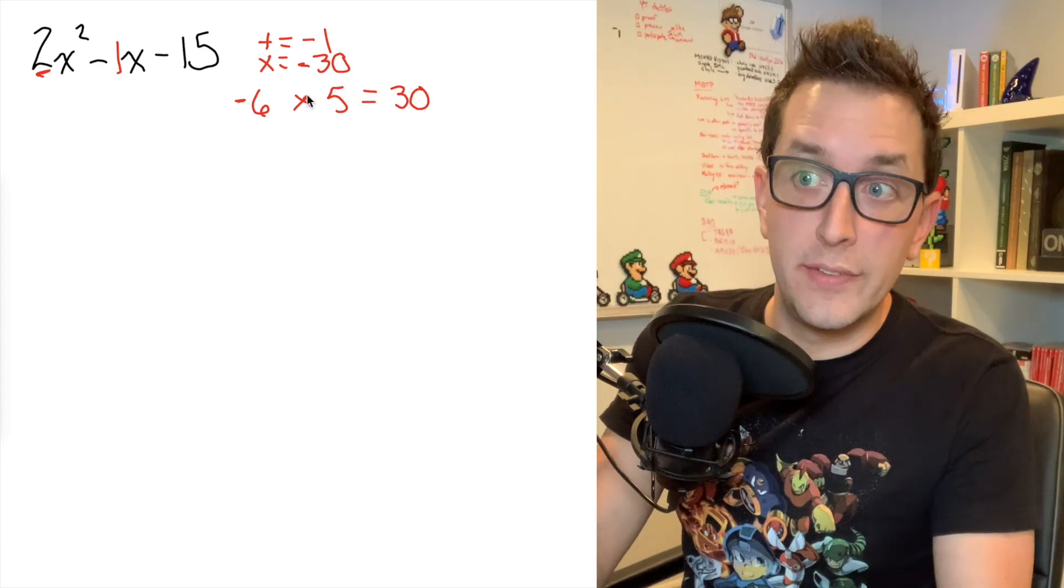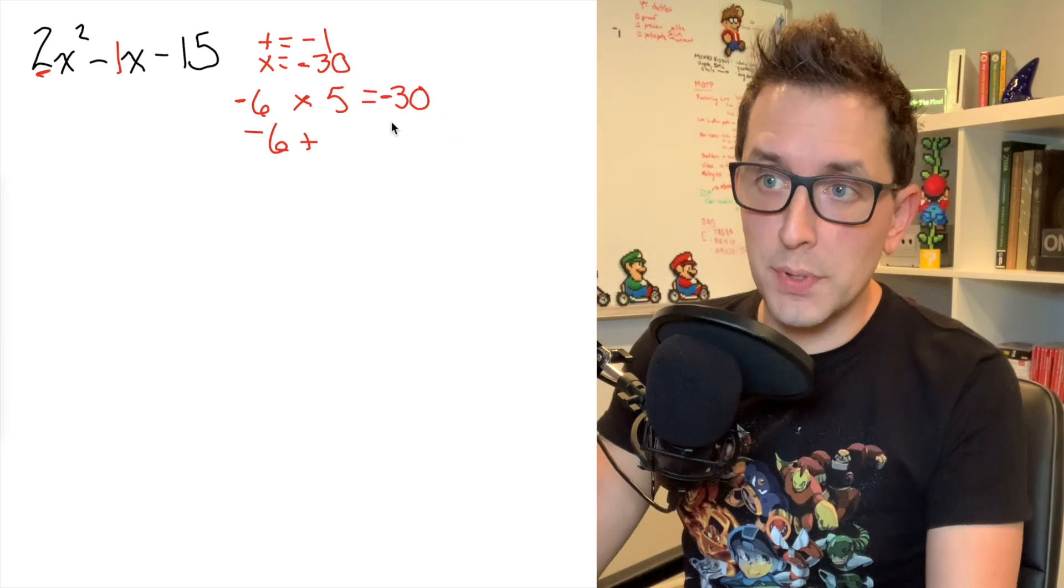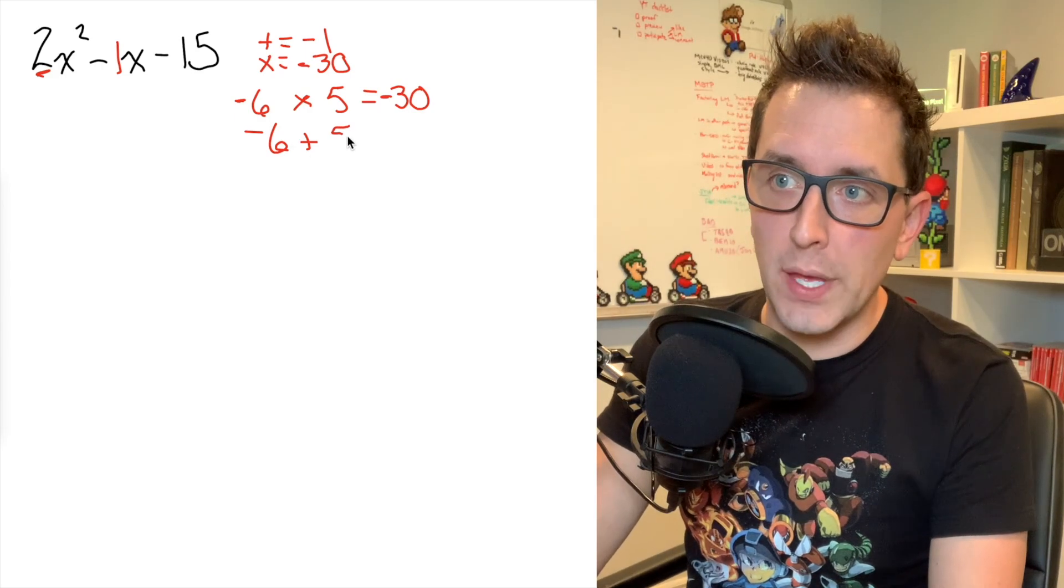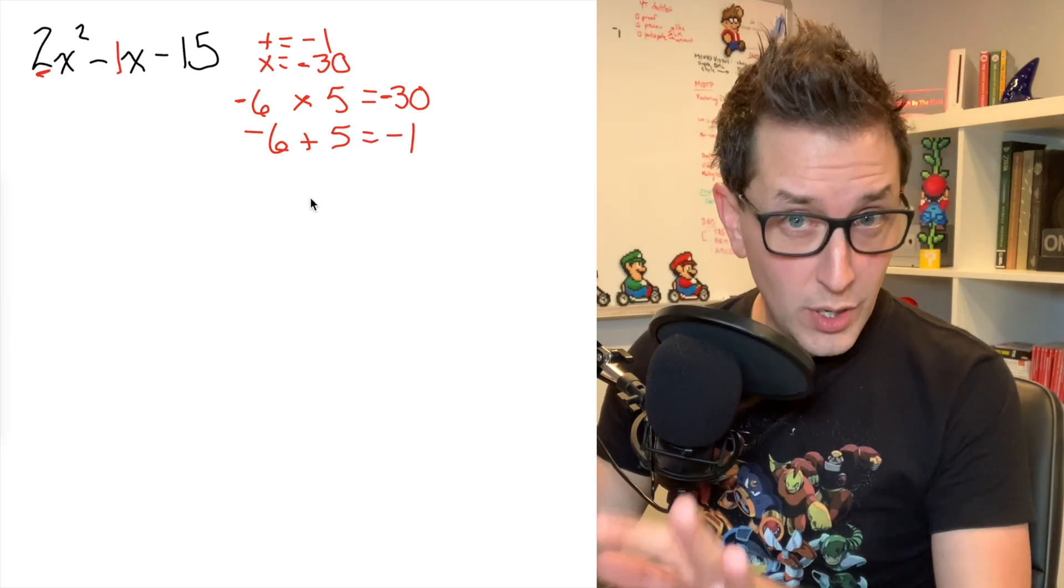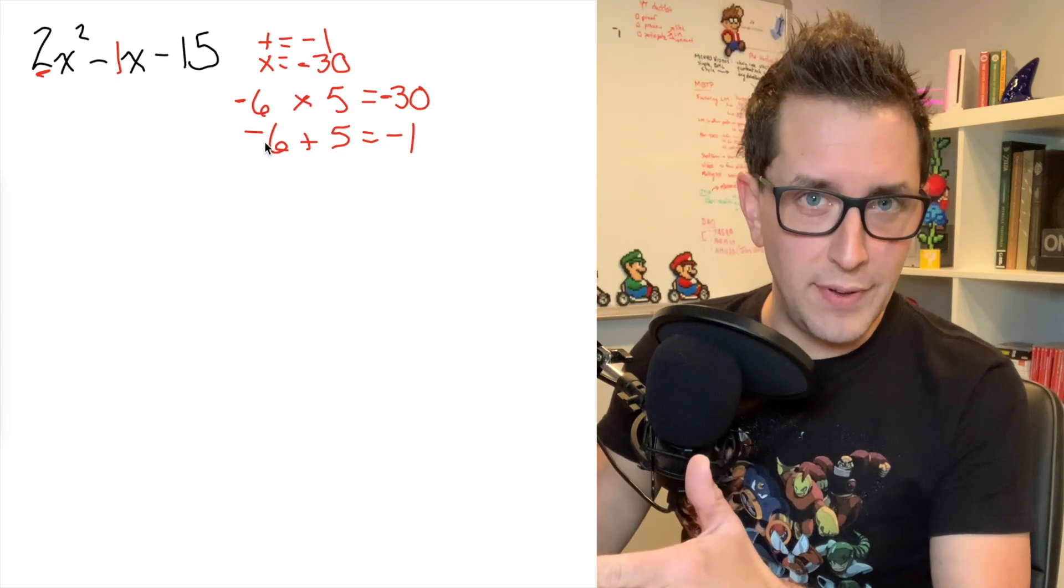So negative six times five is going to give me negative 30 and negative six plus five is going to give me negative one. So my two numbers that I want to work with in this problem are going to be negative six and five.